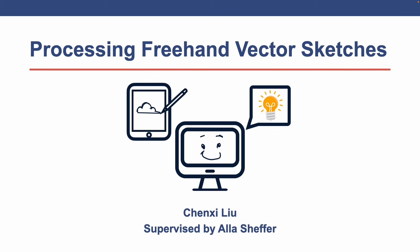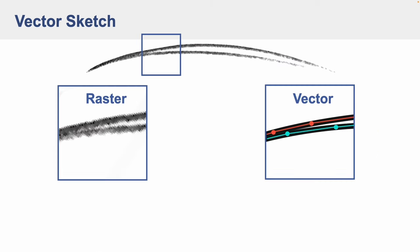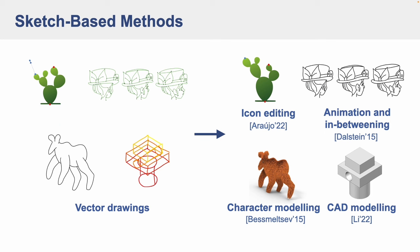Hello, my name is Chen Xi. My thesis focuses on processing freehand vector sketches. Freehand sketching is the fast and intuitive way for artists to communicate visual ideas. Vector sketches contain more information and thus often serve as inputs for sketch-based editing and modeling methods. This method expects clean vector sketches with accurate junctions and no overdrawing.